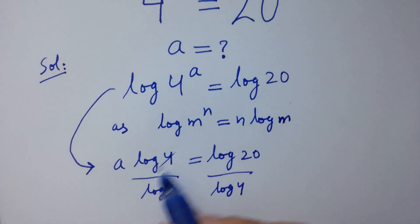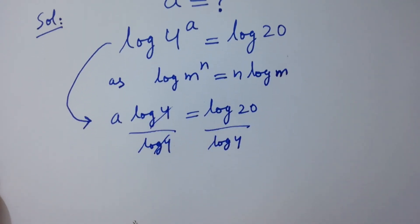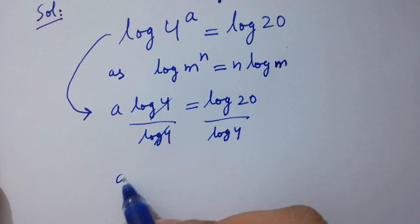Log 4 and log 4 cancels. A equals log 20 over log 4.